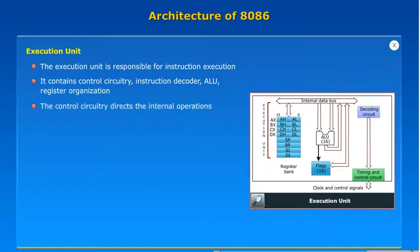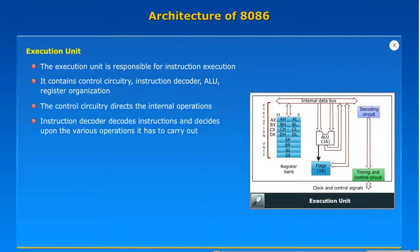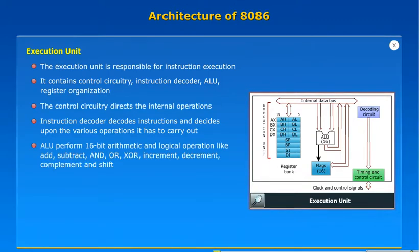The control circuitry directs the internal operations. The instruction decoder decodes instructions and decides upon the various operations it has to carry out. The ALU performs 16-bit arithmetic and logical operations like add, subtract, AND, OR, XOR, increment, decrement, complement, and shift. It also updates the status of the flag register.